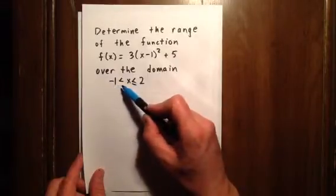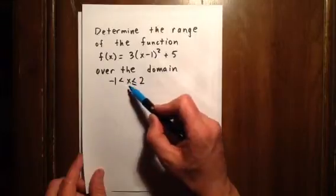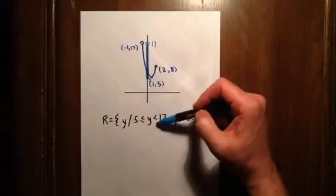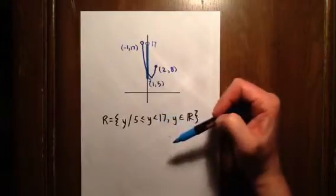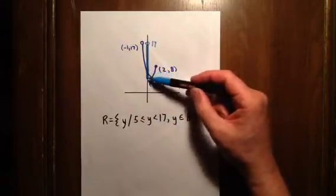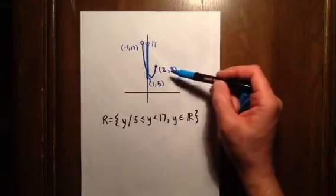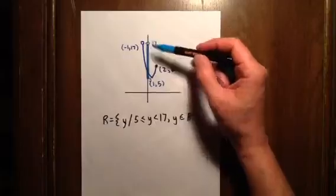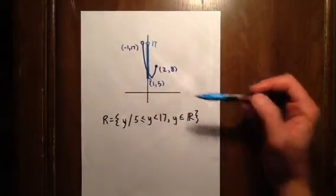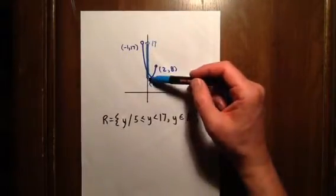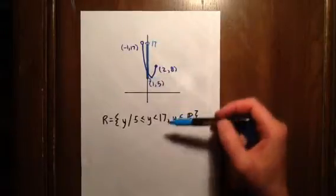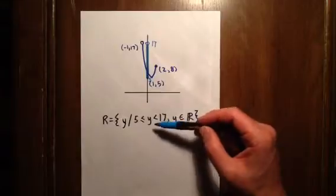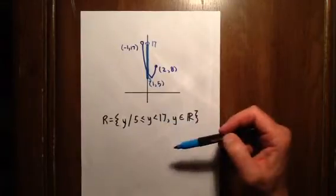So because -1, which produced 17, wasn't in the domain, 17 is not actually in the range. Now, we go all the way down, and we're not actually worried about this 8 value because we see that the 8 isn't actually one of the endpoints of my range in this circumstance. The only endpoint of the range is the 5, the 5 and the 17. We've already determined the 17 isn't actually in the range, so it won't get a less than or equal to symbol.